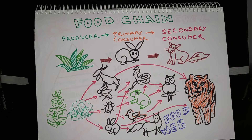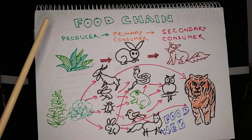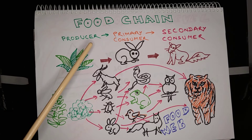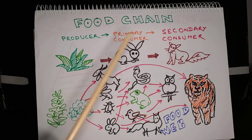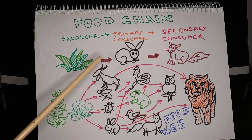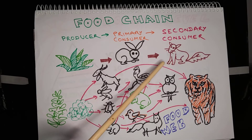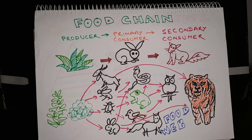Animals eat plants and some animals eat other animals. There is a food chain — a chain of prey and predator. Here is an example of a simple food chain. It has three levels: producer, primary consumer and secondary consumer. The grass is a producer, a rabbit — that is a herbivore — is a primary consumer, and a fox is a carnivore and a secondary consumer. This is the relationship shown through a food chain.